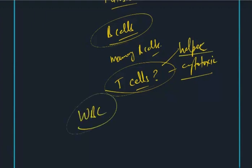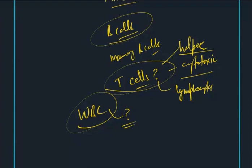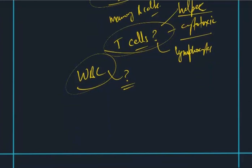WBC — is it a B cell or T cell, or some different kind of cell? T lymphocytes, sir. WBC is T lymphocytes? Yes, sir. Actually, there are neutrophils, eosinophils, and basophils.